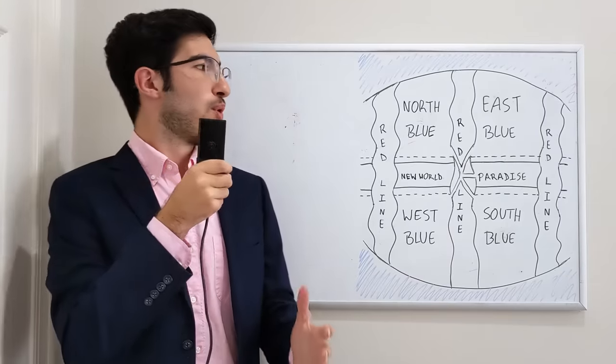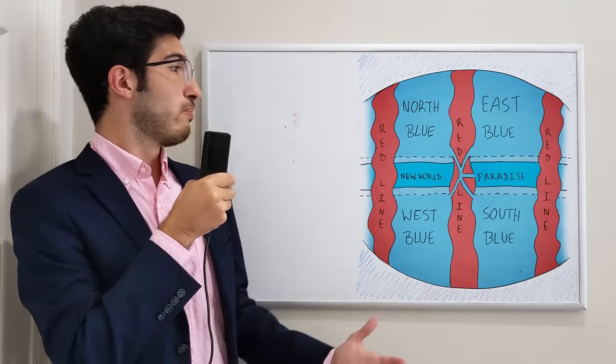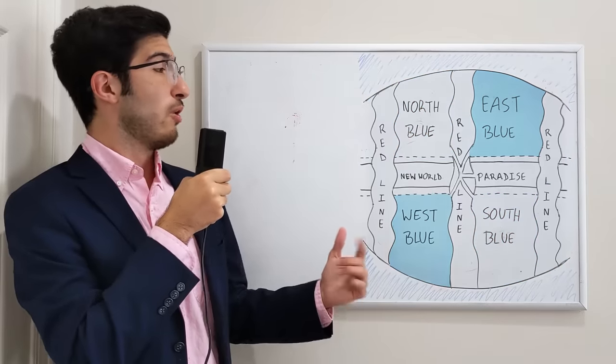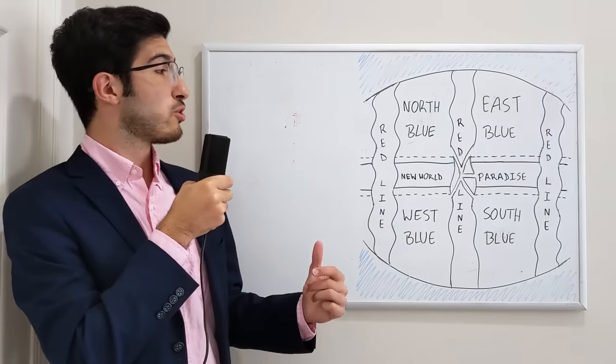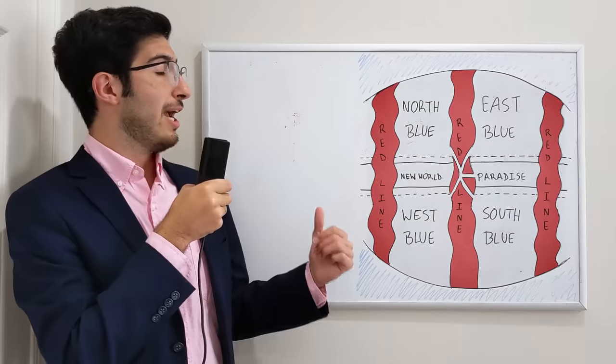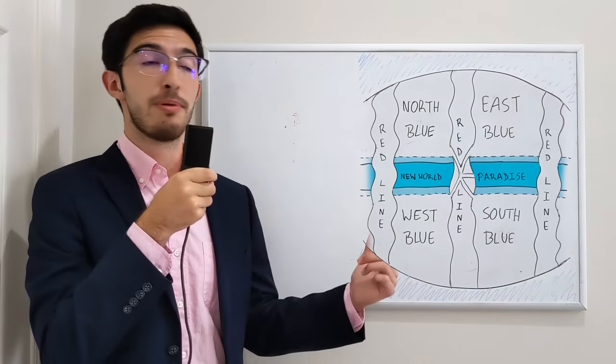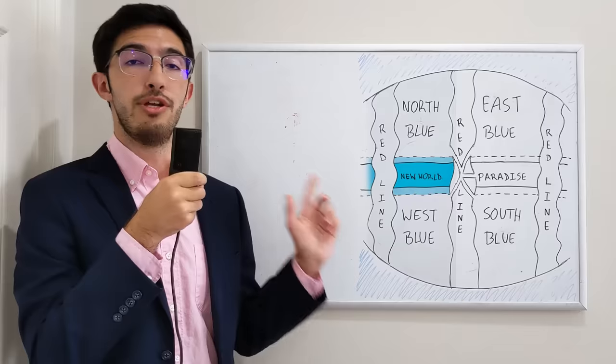So, simple stuff. The world of One Piece looks like this. It is separated into four blues, the north blue, south blue, east blue, and west blue, which themselves are split up by the red line and the grand line, which is itself split into paradise and the new world.